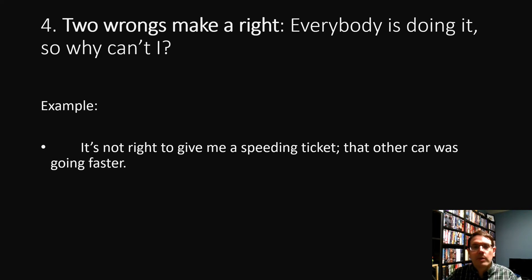The fourth moral fallacy is called two wrongs make a right. The idea is that it's a bad argument to say that since everybody is doing it, why can't I? If something is immoral, the fact that a lot of people are behaving badly doesn't make it morally good. Another example: 'It's not right to give me a speeding ticket, that other car was going faster.' Well, if it's morally wrong to endanger people by driving quickly, the fact that someone else was doing it doesn't make it okay for you.